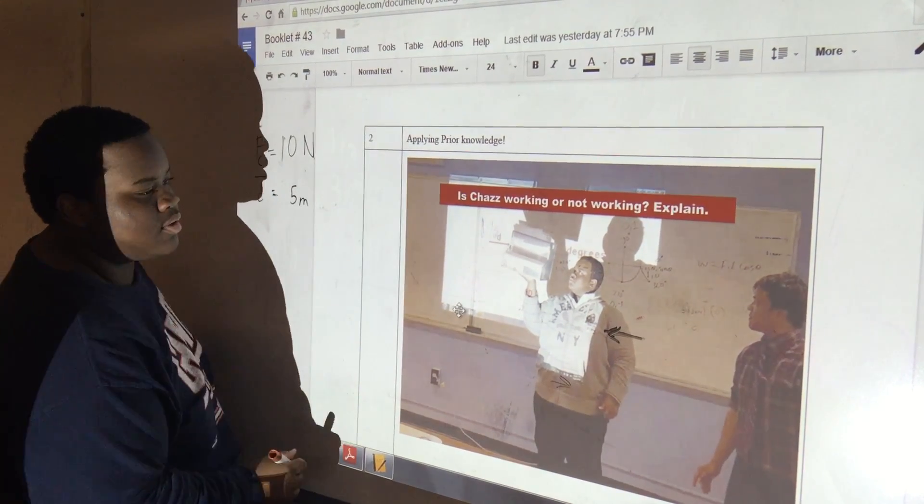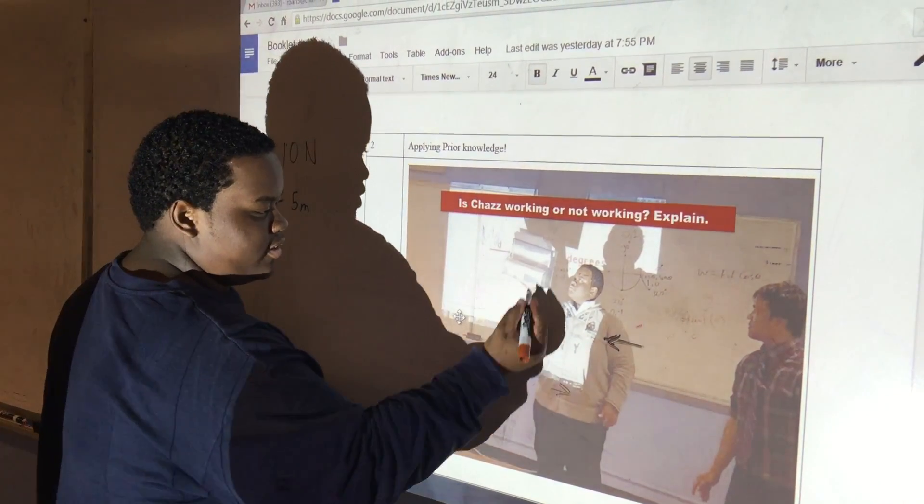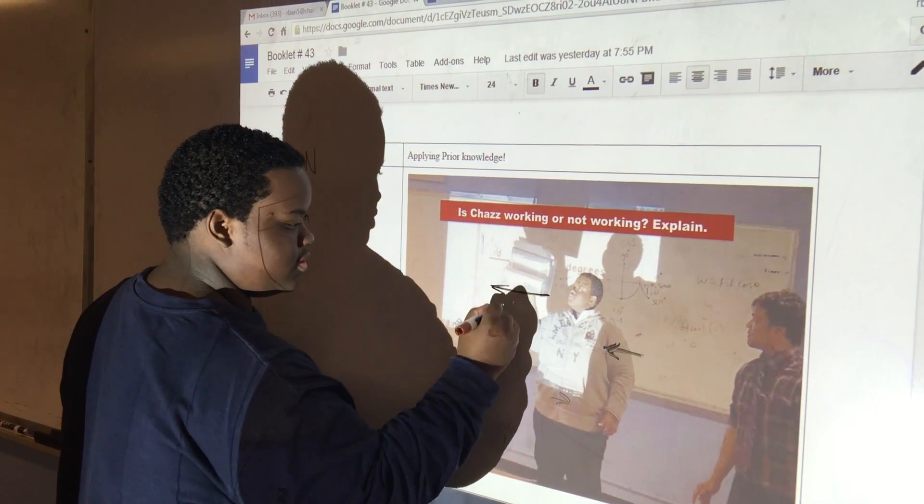So we can draw this here. 5 meters to the west, this is the displacement and the force is this. So we can use the work equation: force times displacement times cosine theta.